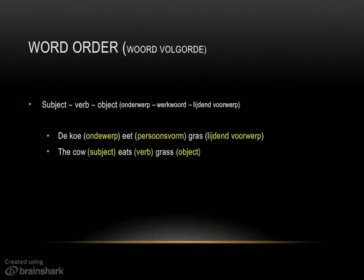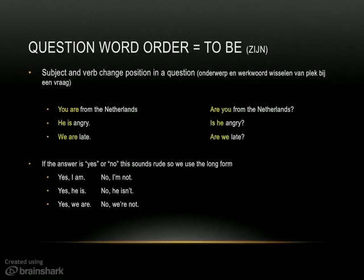Very similar to Dutch. So you can see that the cow is the subject, eats is the verb, and grass is the object. Now you understand the word order in English, it's relatively easy to make a question.